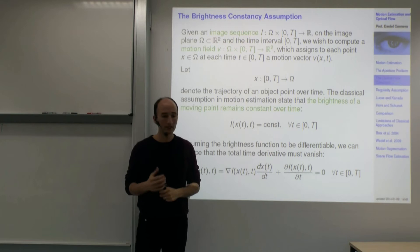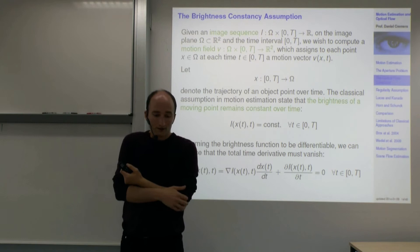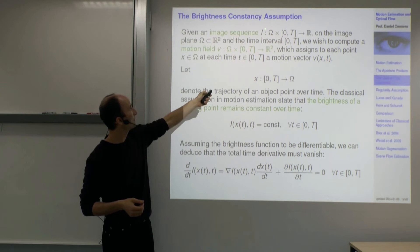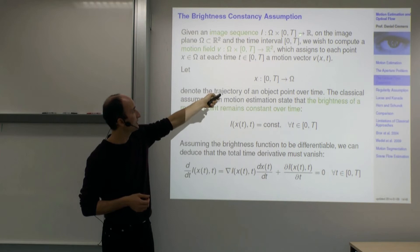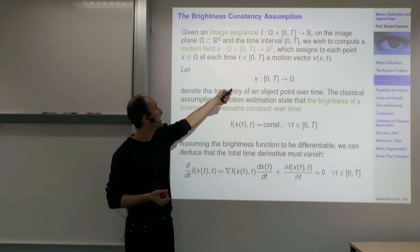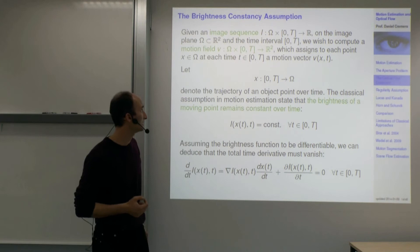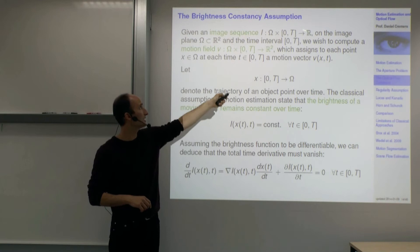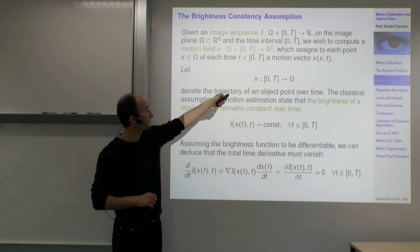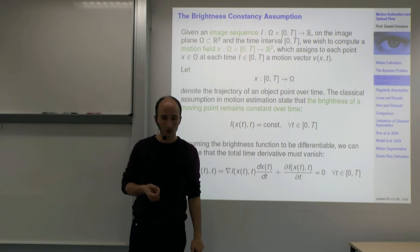How do we mathematically estimate motion? We introduce notation: omega is the image plane, [0, T] is the time interval, both treated as continuous. We have a brightness value at each pixel at each time, called I(x, t). What we are looking for is a motion field — a vector field assigning a two-dimensional vector v(x, t) to each pixel, telling us where the structure at that pixel is moving.